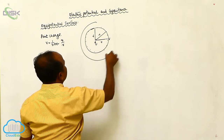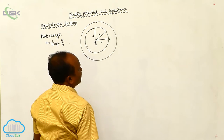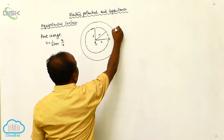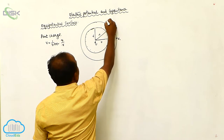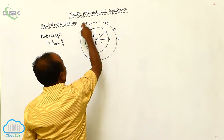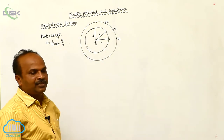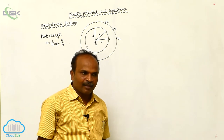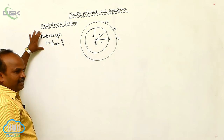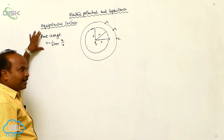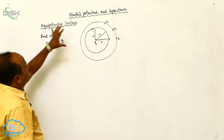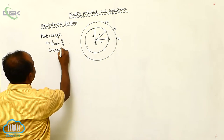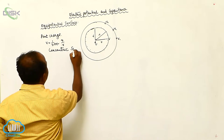With respect to a point charge, imagine another surface. On that surface, at every point — this point, that point, another point — the potential is V1. The locus of all points on which the potential is the same is called an equipotential surface. With respect to the point charge, the equipotential surfaces are concentric spheres.